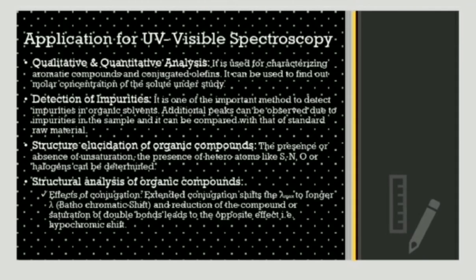Moving towards the applications of UV visible spectroscopy: qualitative and quantitative analysis — it is used for characterizing aromatic compounds and conjugated olefins, and can be used to find the molar concentration of the solute under study. Detection of impurities — it is one of the most important methods to detect impurities in organic solvents; additional peaks can be observed due to impurities and compared with standard raw material. Structural elucidation of organic compounds — the presence or absence of unsaturation and the presence of heteroatoms like sulfur, nitrogen, oxygen, or halogens can be determined. Effects of conjugation — extended conjugation shifts the maximum wavelength to a longer wavelength.